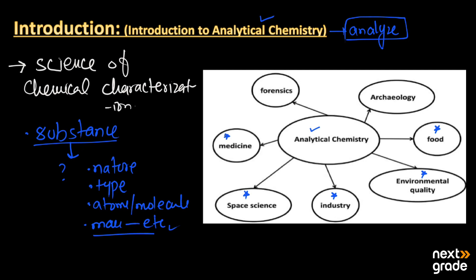In medicine, analytical chemistry helps determine the effect of a medicine, its formula, its main active ingredients, and its side reactions. It also has uses in forensics, where we analyze fingerprints and different items. Finally, it also applies to archaeology — analyzing ancient or very old things. So this is a very broad branch of chemistry.